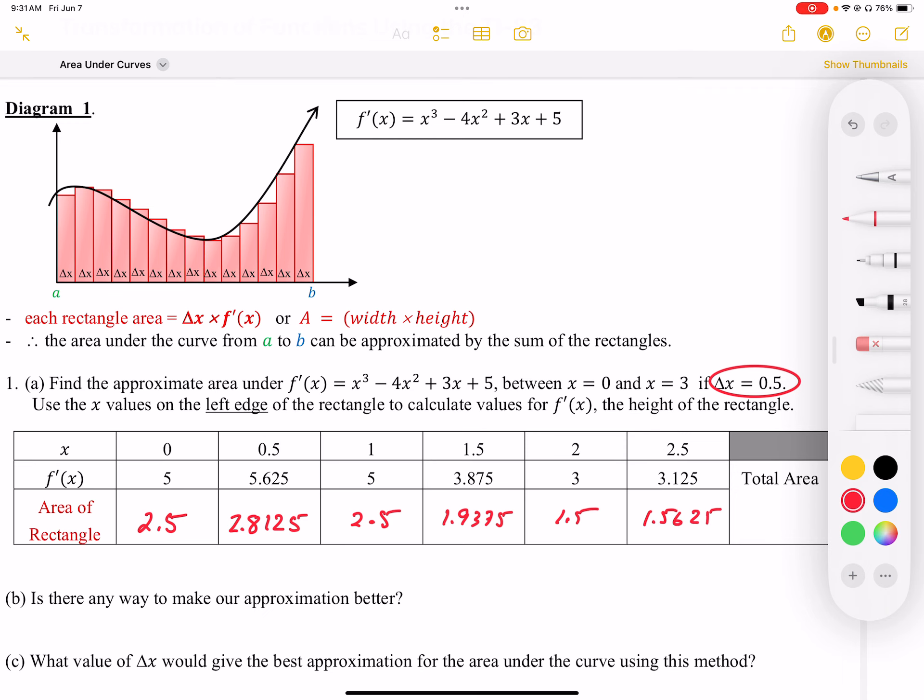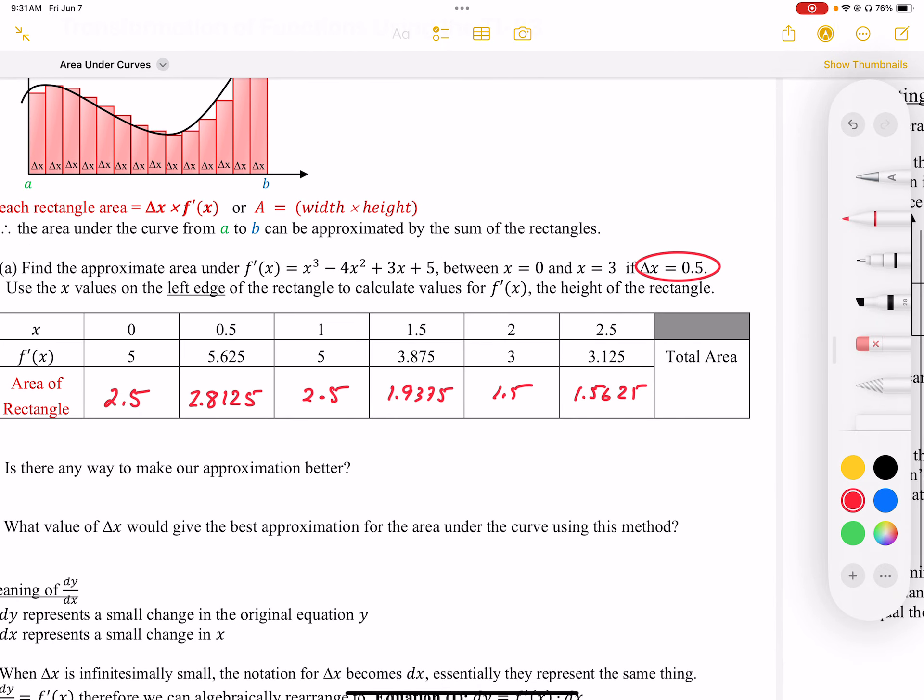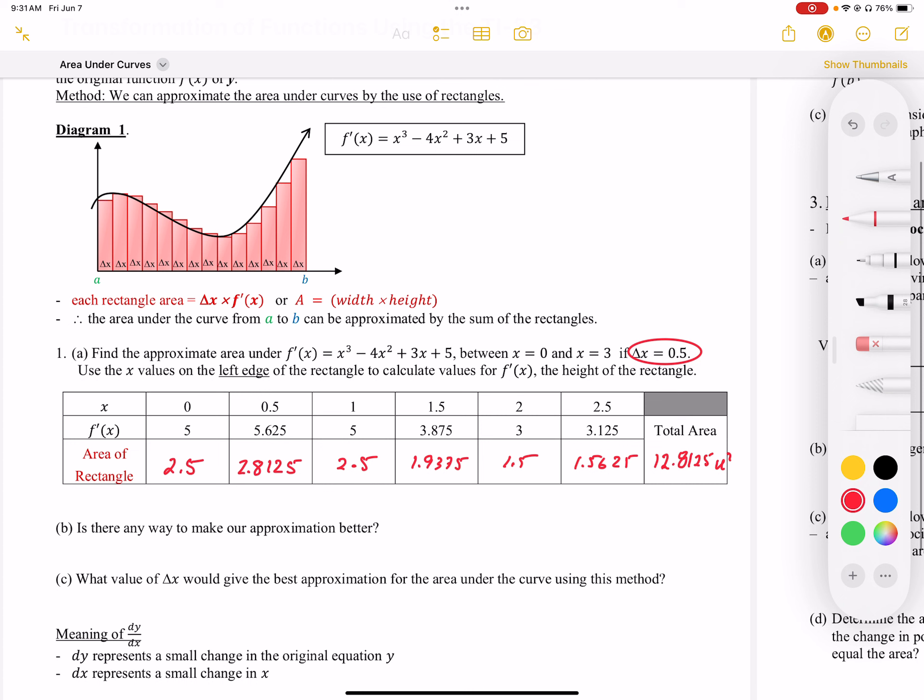Using our calculator, we can add this all together and we should get 12.8125 square units. So that area under that curve is approximately 12.8125.